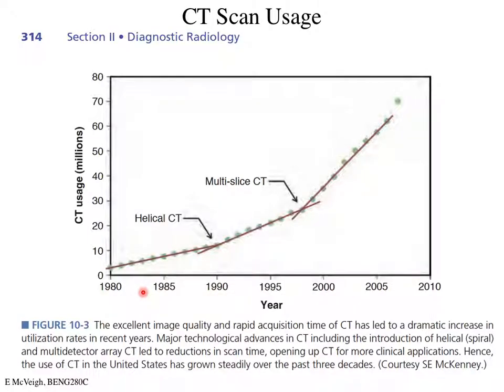CT scans are used not only in cardiovascular disease but primarily in all other branches of medicine — oncology, emergency medicine, musculoskeletal, everything. Because of the increased quality of CT scans, CT use has gone up sort of exponentially, as shown here, and this graph only goes to 2010.